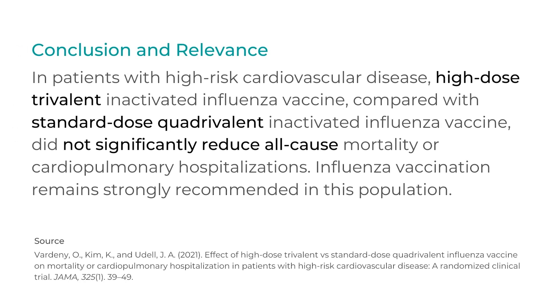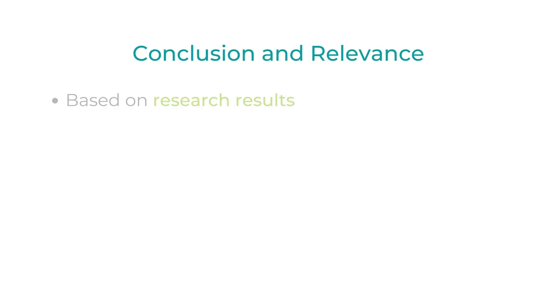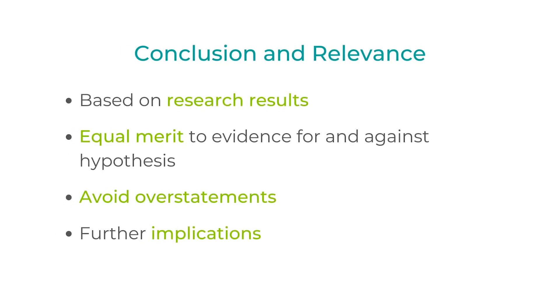Finally, you're going to include your Conclusions and Relevance section. In our example, the first sentence stating that high-dose trivalent and standard-dose quadrivalent vaccines did not seem to decrease hospitalizations squarely characterizes the results. It's very important not to go beyond the results of your research, and to make sure that all the evidence for and against your hypothesis is given equal merit. Don't overstate your conclusion — phrases like 'may be' and 'is likely' are okay if your results don't give you 100% certainty. After that, you'll have a statement discussing the further implications for your research, often related to clinical application or need for further research.